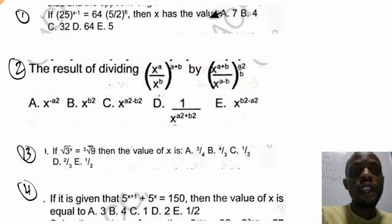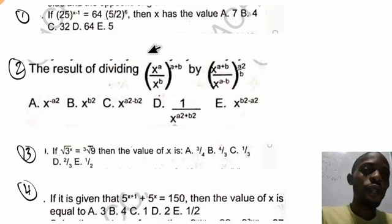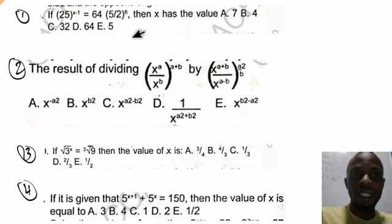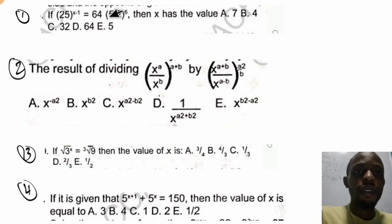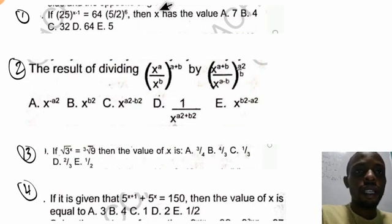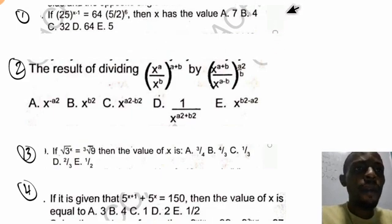Let's go and see how you can solve a question like this. So the first question states that 25 raised to the power of s minus 1 is equal to 64 times the bracket 5 over 2 raised to the power of 6. We have to find the value of s.